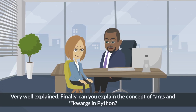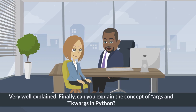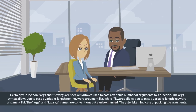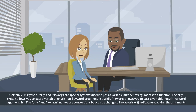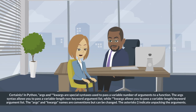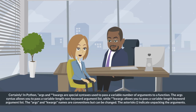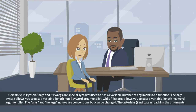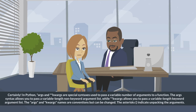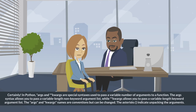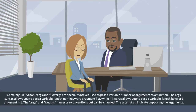Very well explained. Finally, can you explain the concept of *args and **kwargs in Python? Certainly. In Python, *args and **kwargs are special syntaxes used to pass a variable number of arguments to a function. The *args syntax allows you to pass a variable-length non-keyword argument list, while **kwargs allows you to pass a variable-length keyword argument list. The *args and **kwargs names are conventions but can be changed. The asterisks indicate unpacking the arguments.